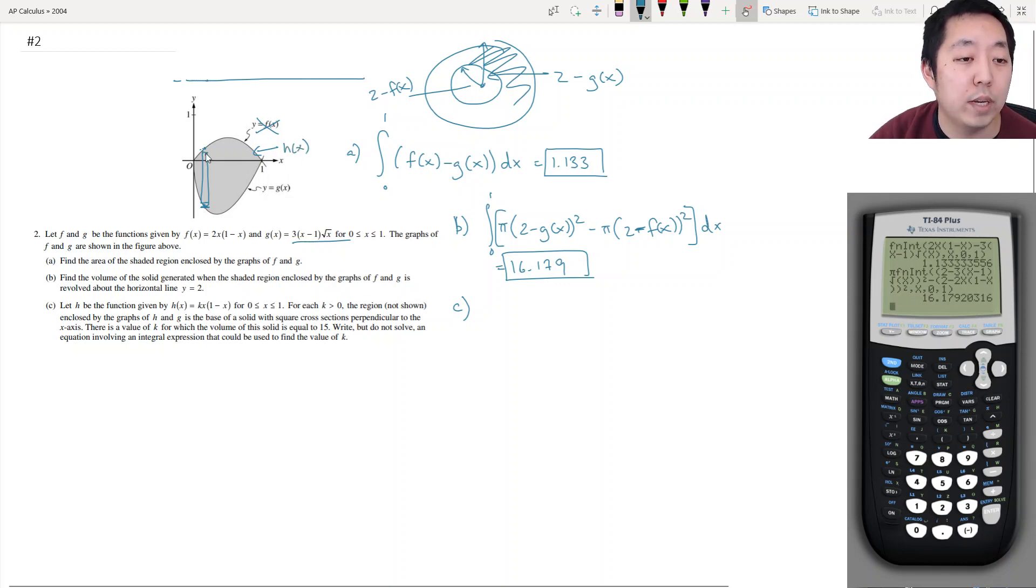So now what happens is each of these rectangles that I make, when it turns into a square, right? Because they're basically saying with square cross-sections. So each of these will turn into a square. So if I kind of lay out my little rectangle here, it's going to make another little sort of...